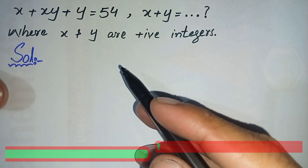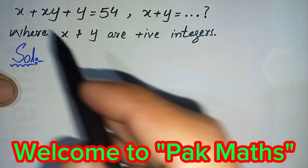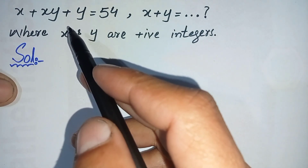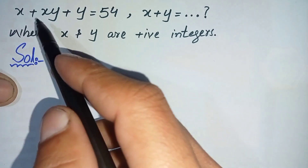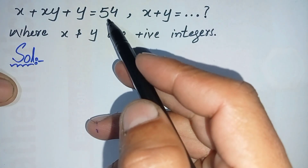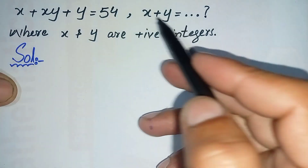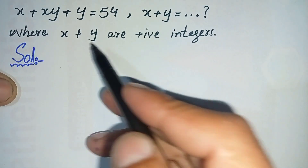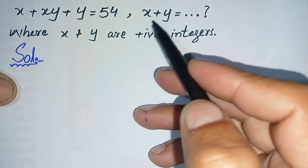Hello everyone, welcome to Factmas. In this video I'm going to solve a nice algebraic math problem: when the value of x + xy + y is equal to 54 is given, we will find the value of x + y, where x and y are positive integers.